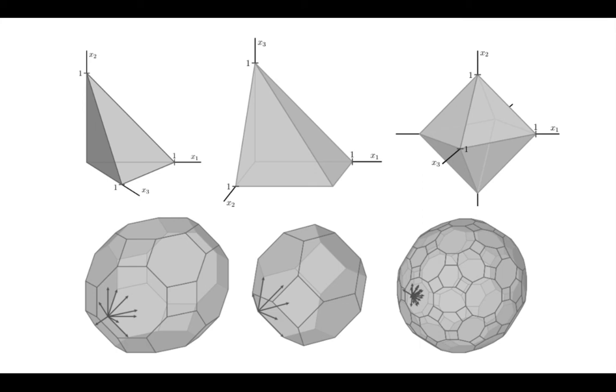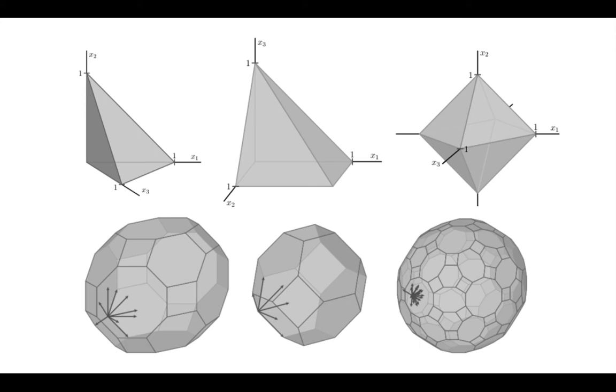There's much more to be said about the theory of polytopes and polyhedra. I recommend two of my favorite books. There's a book by Branko Grünbaum that was written in the 60s and was updated about 10 years ago. That's a classic. And there's a book by Günther Ziegler that was written in the 90s. And these are two of the books where you can find a lot of background, and a lot of beautiful theory and computations and pictures of convex polyhedra.